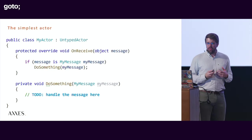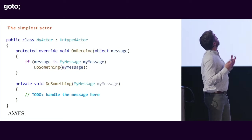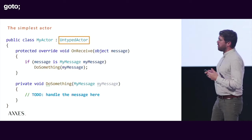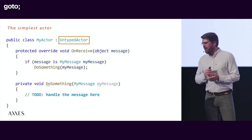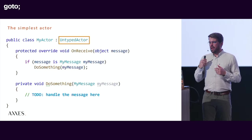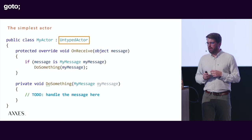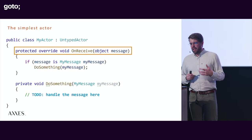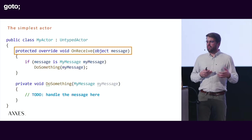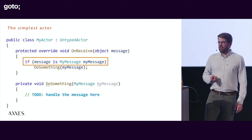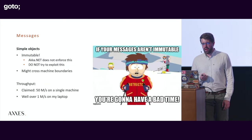Writing an actor in code is really easy — you just inherit from the UntypedActor class, which is the simplest one in Akka.NET. You implement OnReceive, and messages come in and you receive all messages sent to that actor. You check what type of message you're getting and then do something with it.